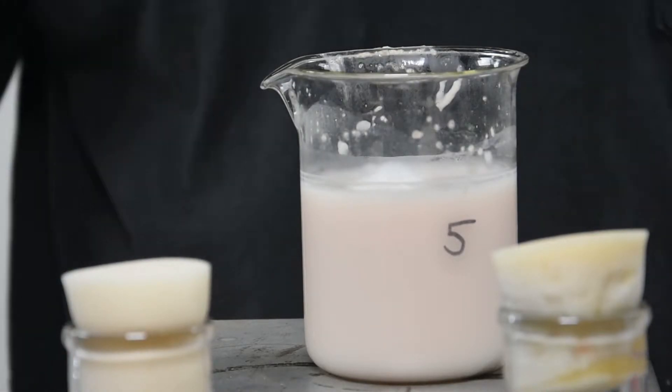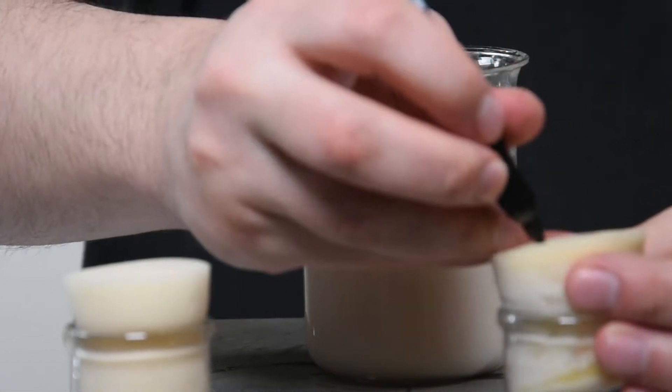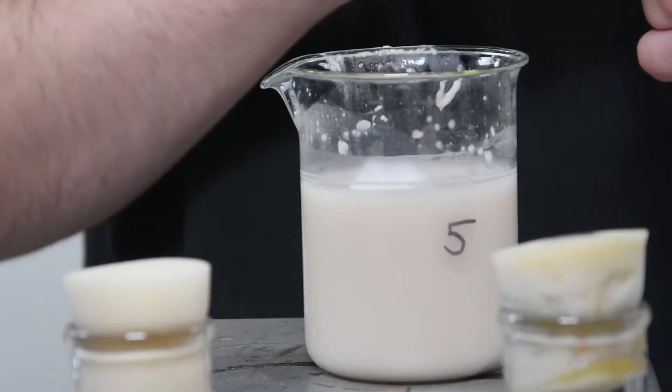With the yeast pitched, Phil then marks the top of the foam stopper with a permanent marker so that we don't mix up which one's which.